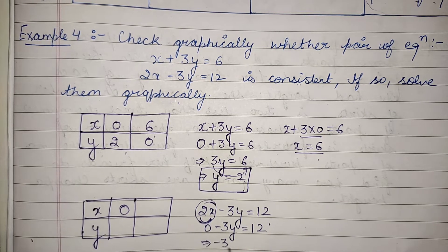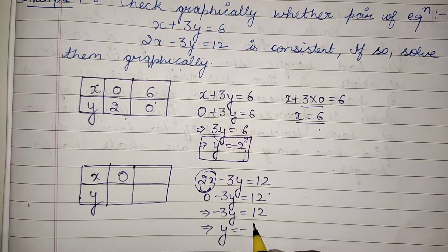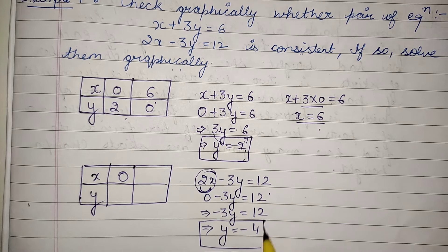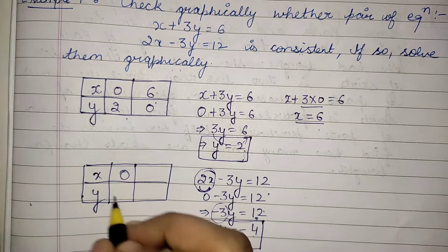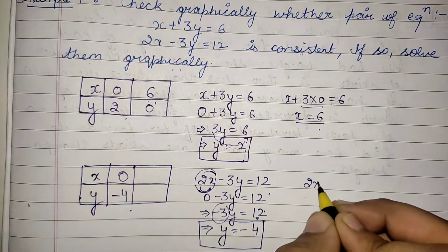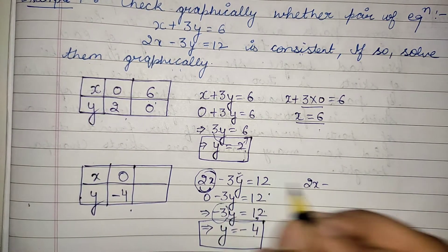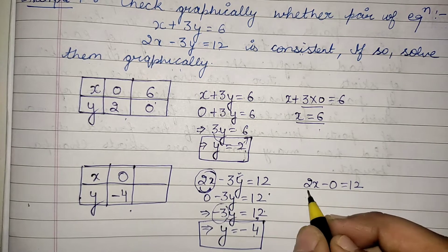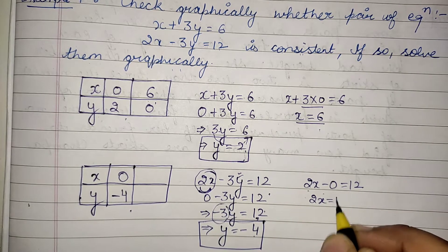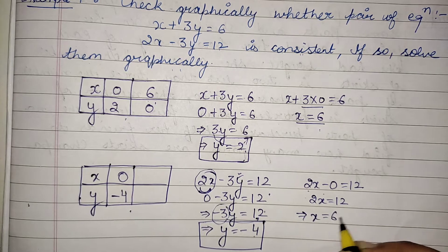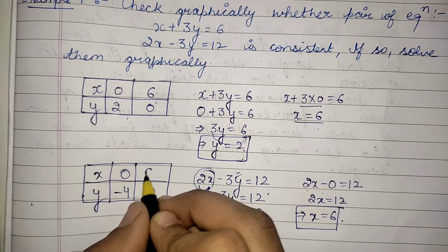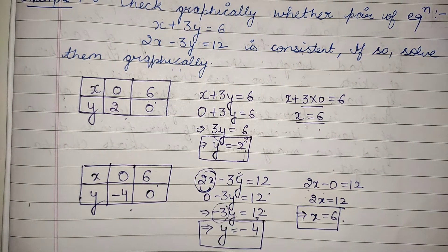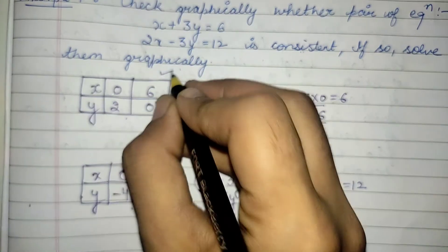Since −3y = 12, y = −4 (dividing 12 by −3). Similarly, if y = 0, then 2x = 12, so x = 6. So when y = 0, x = 6.